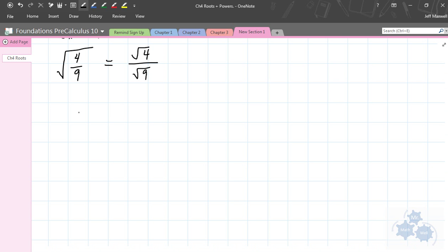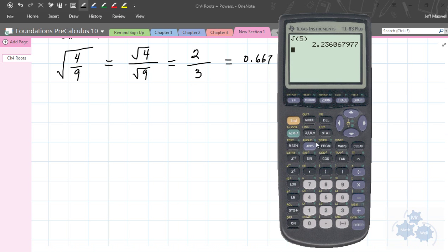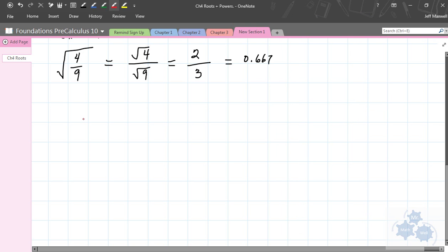Why is that important? Well, it's important because we can actually simplify this. We can write a number value for this. That's 2. And this number value for the square root of 9 is 3. So, two-thirds, that's about 0.667. If we round it off, that's the approximate value. Of course, 2 over 3 would be the exact value. If you get on your calculator and you go square root of 4 divided by 9, and you ask your calculator to give you a decimal, look at that.